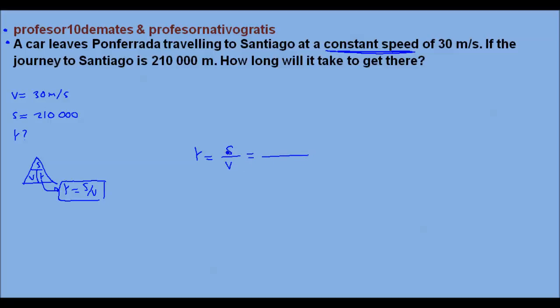So 210,000 divided by 30. And we take our inseparable friend, our calculator. And if your calculator works, 7,000 seconds. And as always, as we do everything correct, always we give ourselves an okay.